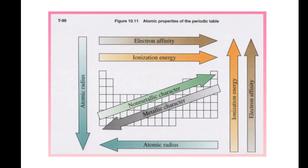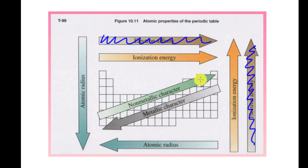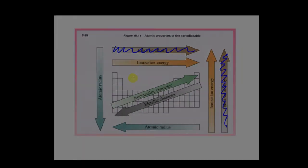To recap: atomic radius increases going down a group and decreases going from left to right across a period. Ionization energy increases from left to right and decreases going down a group — the two trends are opposite to each other. As atoms get smaller, it's harder to remove electrons; as atoms get bigger, it's easier. That's why metals lose electrons and non-metals gain electrons. There are additional trends like metallic and non-metallic character that we'll continue exploring in class.